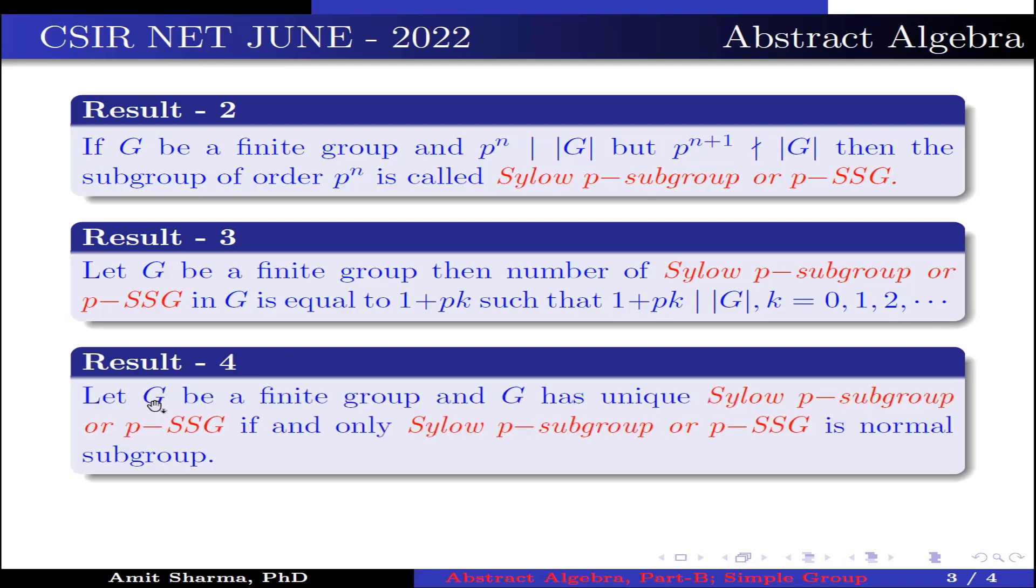Result number 4: Let G be a finite group and G has unique Sylow p-subgroup or p-SSG if and only if Sylow p-subgroup or p-SSG is normal subgroup.